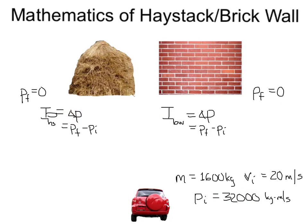Recall that delta is just a shortcut for final minus initial. So the change in momentum is the final momentum minus the initial momentum. For both, the final momentum is 0 minus the initial is 32,000. So both the haystack and brick wall change my momentum by negative 32,000 kilogram meters per second.